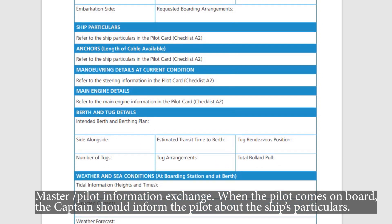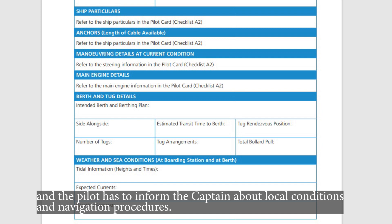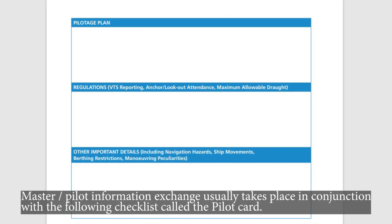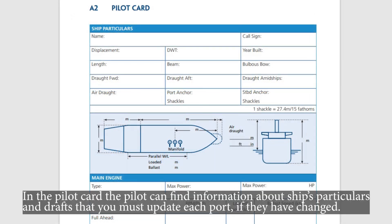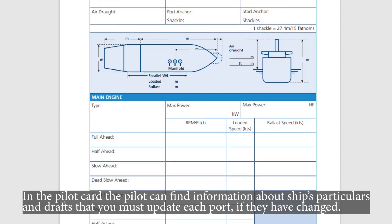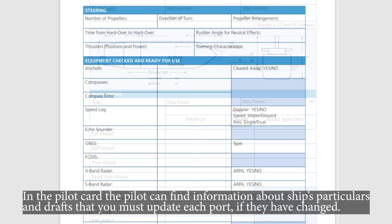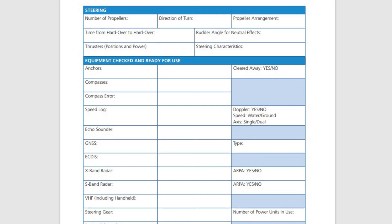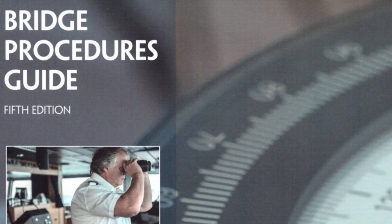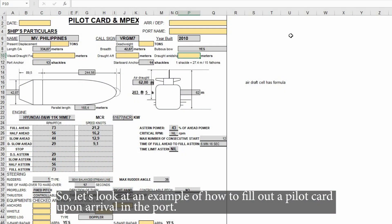When the pilot comes on board, the captain should inform the pilot about the ship's particulars, and the pilot has to inform the captain about local conditions and navigation procedures. Master-pilot information exchange usually takes place in conjunction with the pilot card. In the pilot card, the pilot can find information about the ship's particulars and drafts, which must be updated each port if they have changed.